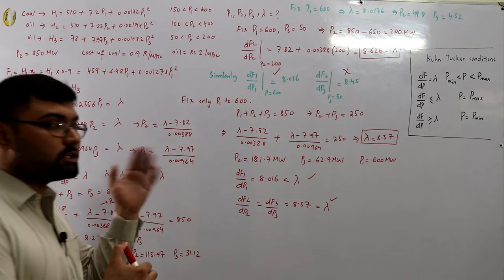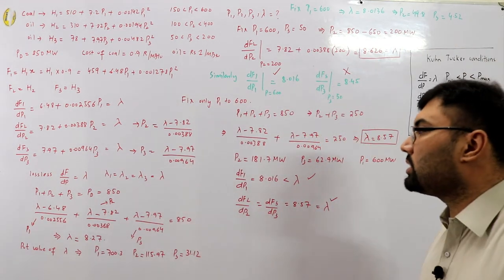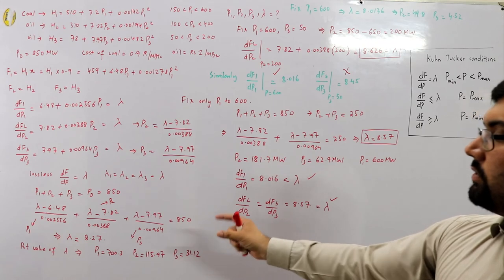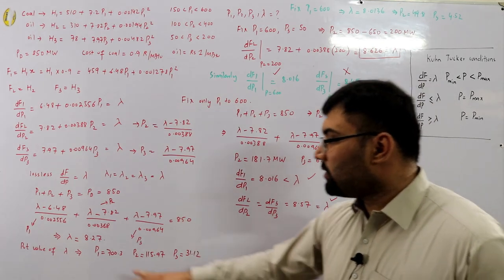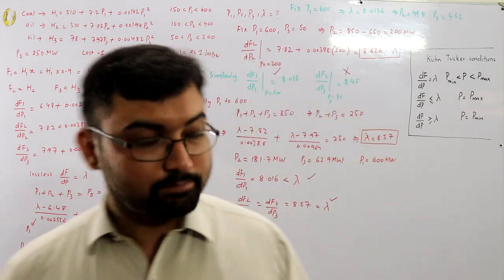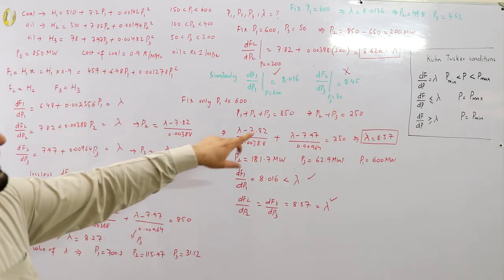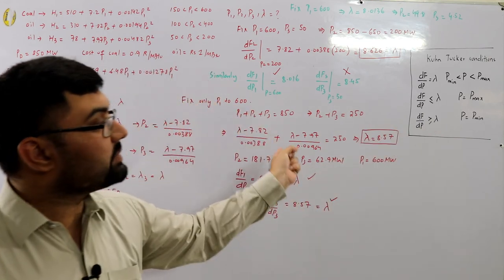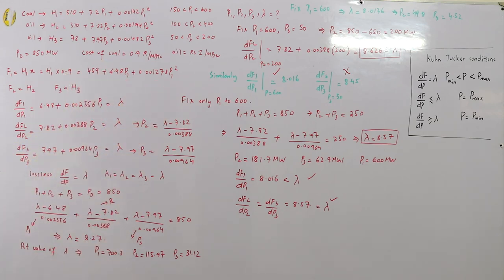This was time-consuming with only three units. For ten generators it would be far more complex. At this level, typically only one unit would be out of range. The key takeaway is the Kuhn-Tucker conditions: df/dp equals λ in range, less than or equal to λ at maximum, and greater than or equal to λ at minimum.